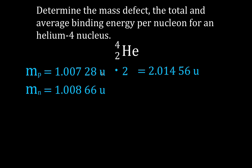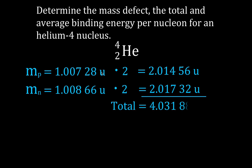And then we're going to multiply those by two because we have two protons, and we also have two neutrons. Then we're going to add those two masses together, and that's going to give us the total mass of two individual protons and two individual neutrons before they're bound in the nucleus. We're going to call that the mass before, MB.